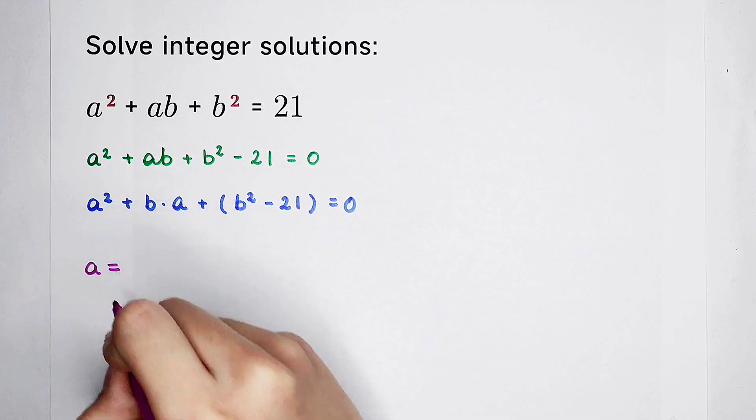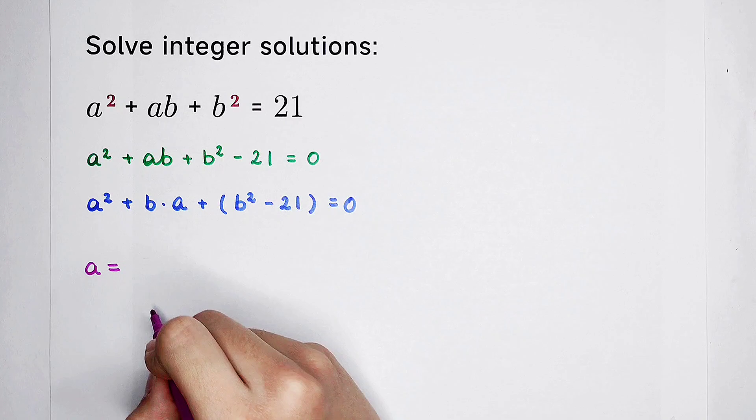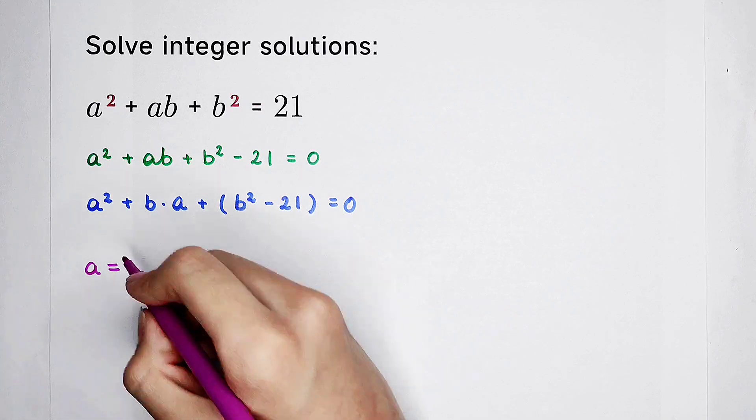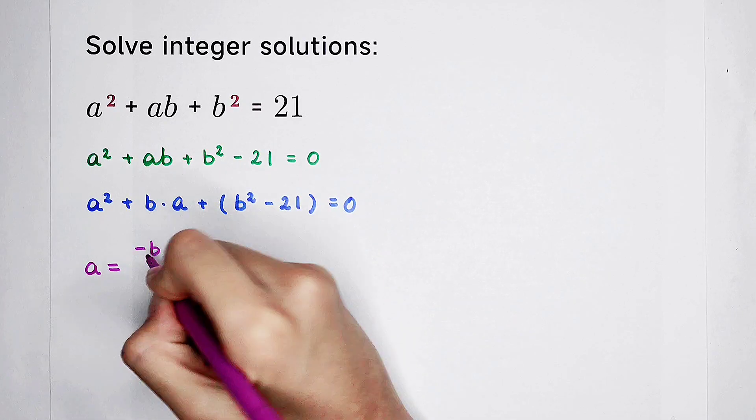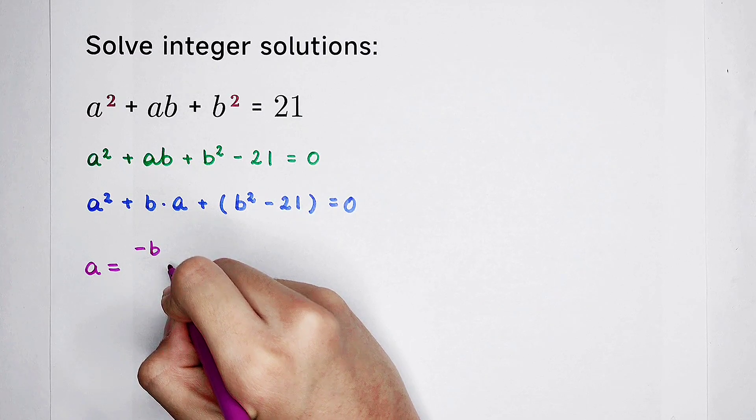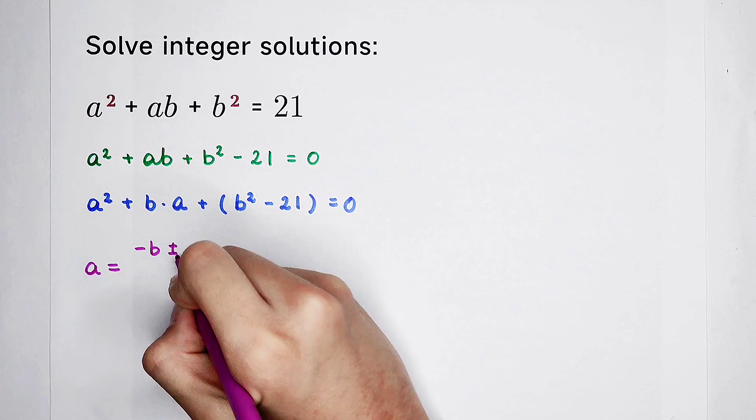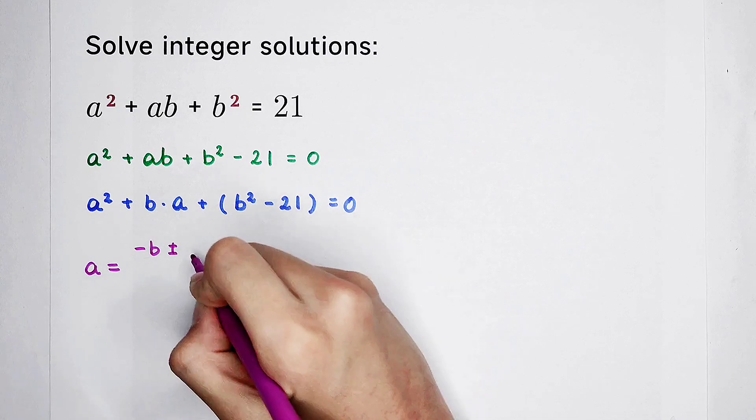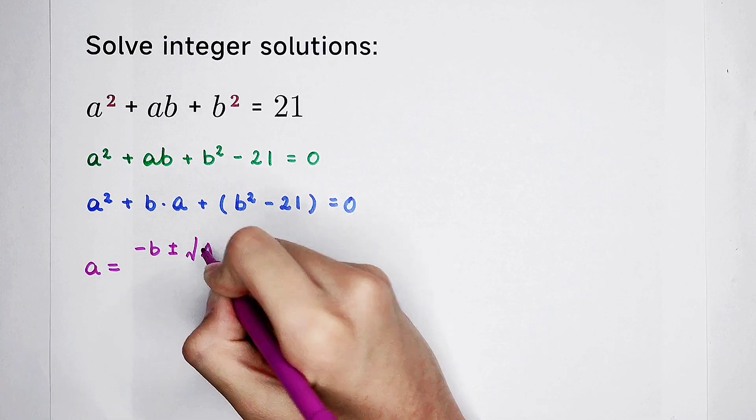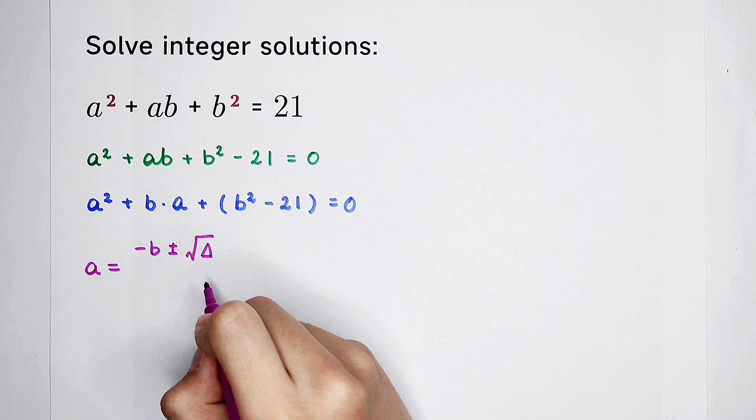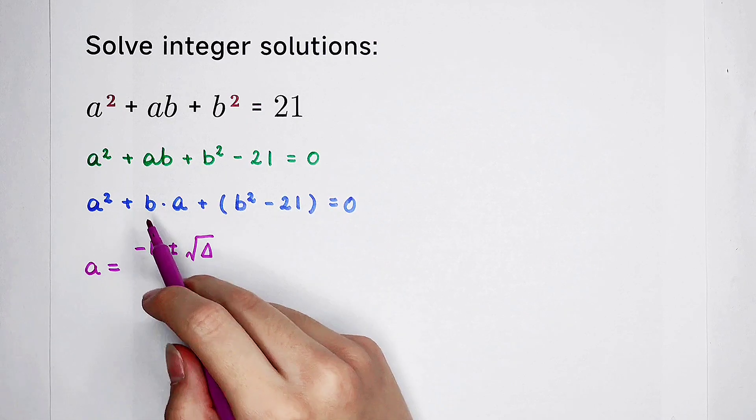a is equal to negative the coefficient of a. That is, negative b. And then, add or subtract plus or minus square root of delta. Delta is the coefficient of b squared minus 4 times the coefficient of a squared, times this thing.